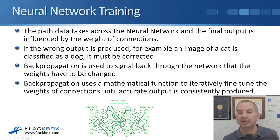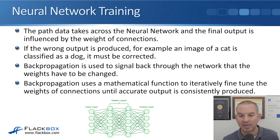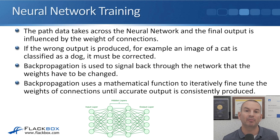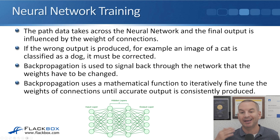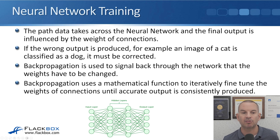This can be done by a human or an automated method: when the output is incorrect, we signal back to say it was wrong — for example, you said this was a dog, but it is actually a cat. The system will then automatically use a mathematical formula to change the weights on the connections. We iteratively cycle through this process, going through multiple iterations of back propagation until the system is consistently producing the correct result with accuracy.